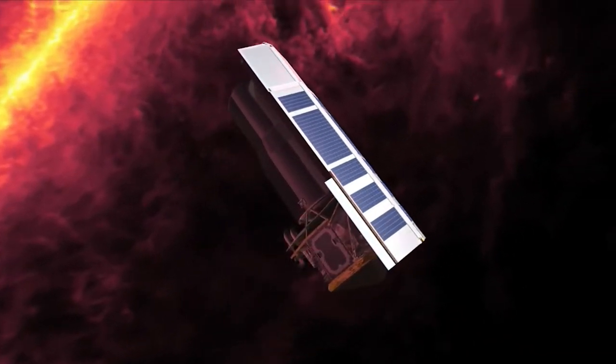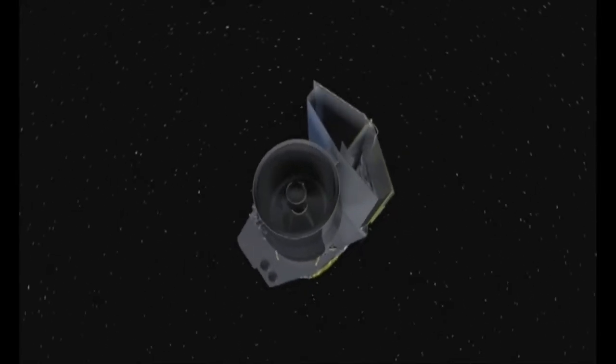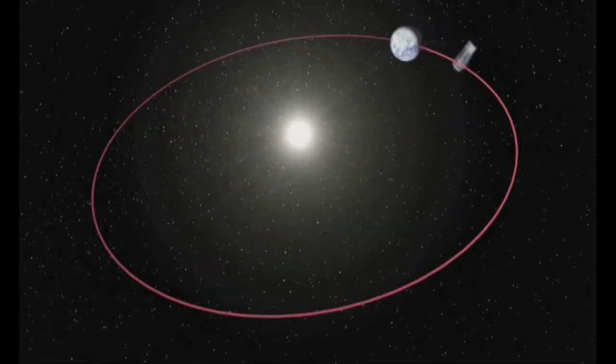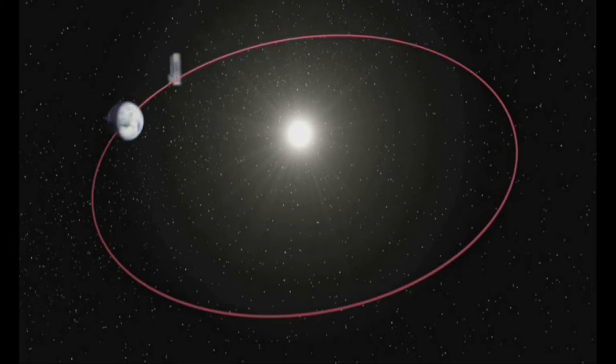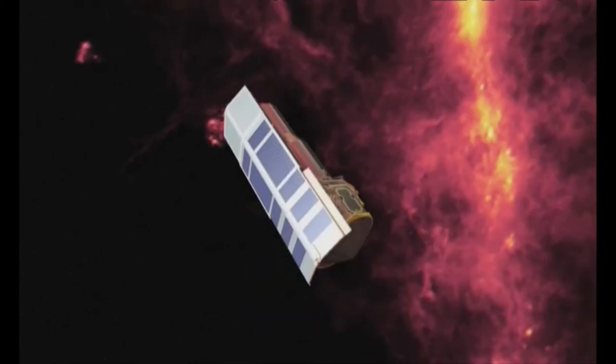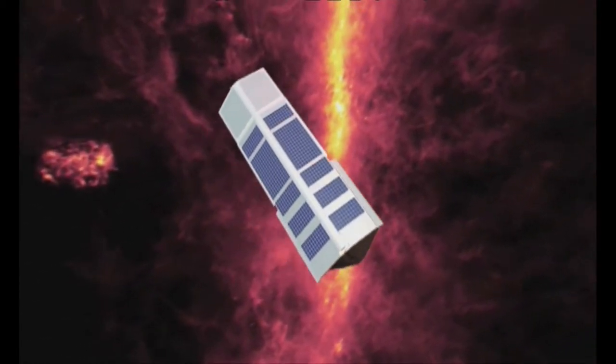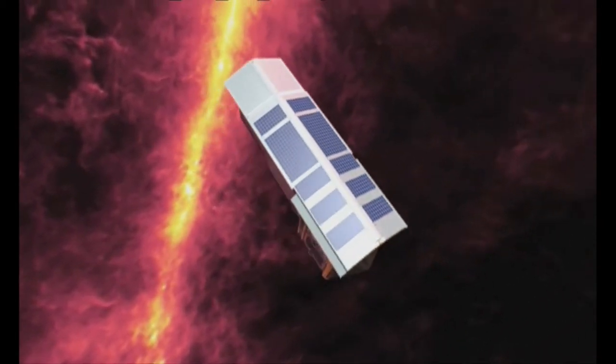Spitzer was named after Lyman Spitzer, an astronomer who promoted the concept of space telescopes in the 1940s. Spitzer operates in the so-called Earth-trailing orbit, which means the telescope is trailing and drifting away from Earth orbit. Its primary mirror is 85 cm in diameter with an f12 lens made of beryllium and cooled to minus 268 degrees Celsius.